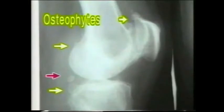Note the red arrow pointing to a rounded radio opacity lying within the joint cavity. It is termed as a loose body. It may change its position in different X-rays.